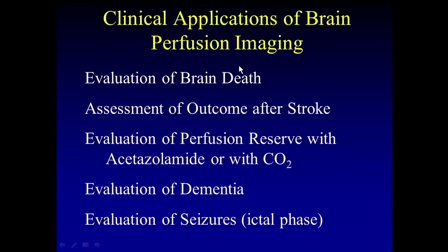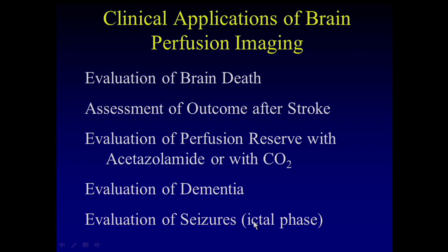When we use this perfusion tracer, it's for brain death assessment. You can also use it for assessment of outcome after stroke. Some people use this tracer like a cardiac stress test of the brain — having them inhale acetazolamide or breathe CO2 to try to increase blood flow and see if there's a change in distribution pattern. You can also use these tracers for looking at dementia, though most people now are using FDG PET, and for looking at seizures. When using a perfusion tracer to detect seizures, it has to be injected during the ictal phase within the first minute, and most places can't get the tracer into the patient in time.